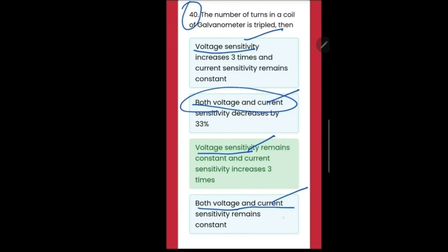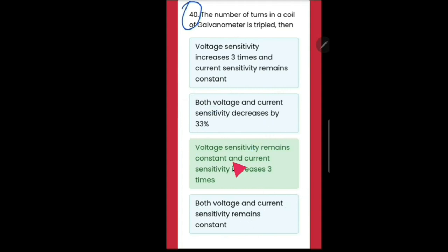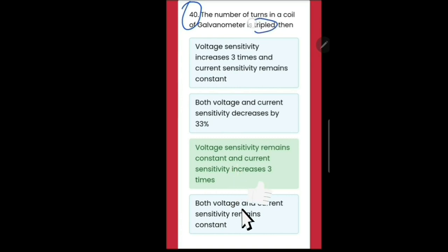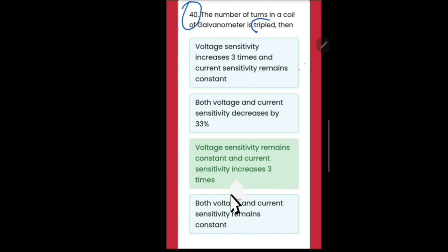It is very wrong. The question is: the number of turns in a coil of a galvanometer is tripled. It is 3 times - it is not a 33% increase. It increases by 3 times and one quantity remains constant because it is tripled 3 times - it will cancel the 33%. So both incorrect options are being shown wrong by the support of the question.